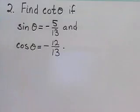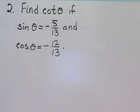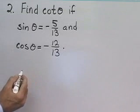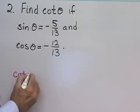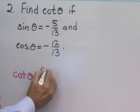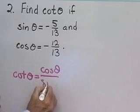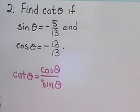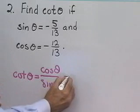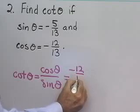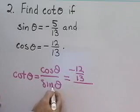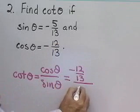Here's our next problem: find cotangent theta if sine theta is equal to negative 5 thirteenths and cosine theta is equal to 12 thirteenths. Well, I know from my ratio identities that cotangent of theta is always equal to cosine theta divided by sine theta. In this case, cosine theta is negative 12 thirteenths and sine theta is equal to negative 5 thirteenths.